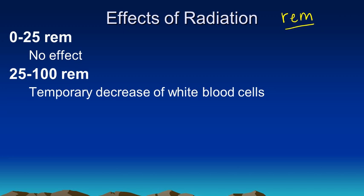If you had a decrease of white blood cells, the person would be more susceptible to getting sick. At this level of radiation, you might find someone is more susceptible to getting a cold, or coming down with the flu, or some other minor illness.